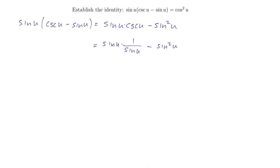And now we want to know what this is equal to. Well, sine u times 1 over sine u is simply 1. So this is 1 minus sine squared u.